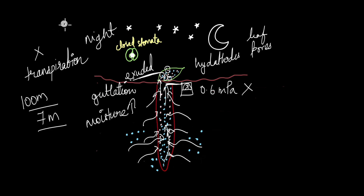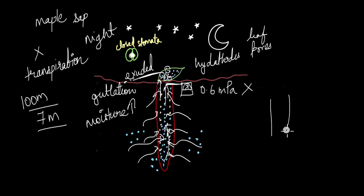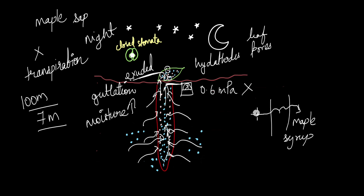Root pressure is beneficial especially in trees like maple, where root pressure causes the phloem sap to be exuded out through the bark of the maple tree. This is what we collect as maple syrup. The reason maple syrup and other forms of phloem sap are exuded out of the bark in trees like maple is because of this root pressure.